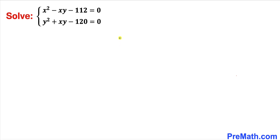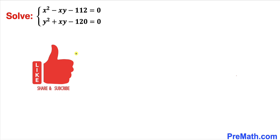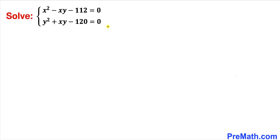Welcome to pre-math. In this video we are going to solve this given system of equations: x² - xy - 112 = 0, and the second equation is y² + xy - 120 = 0. In other words, we are going to solve for x and y. Let's get started.